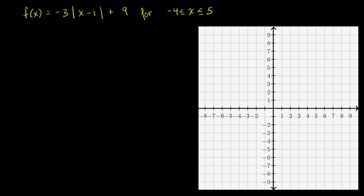Let's think a little bit about the graphs of absolute value functions. I've defined one right over here: f of x is equal to negative 3 times the absolute value of x minus 1, plus 9. And we've constrained its domain — negative 4 is less than or equal to x, which is less than or equal to 5.